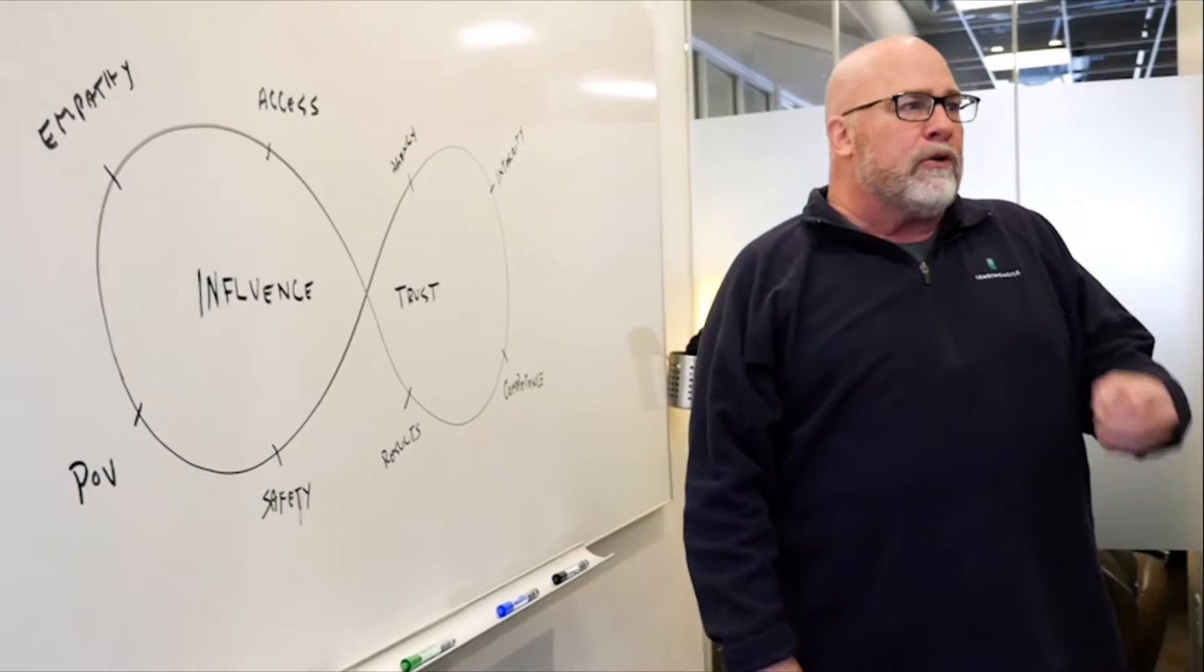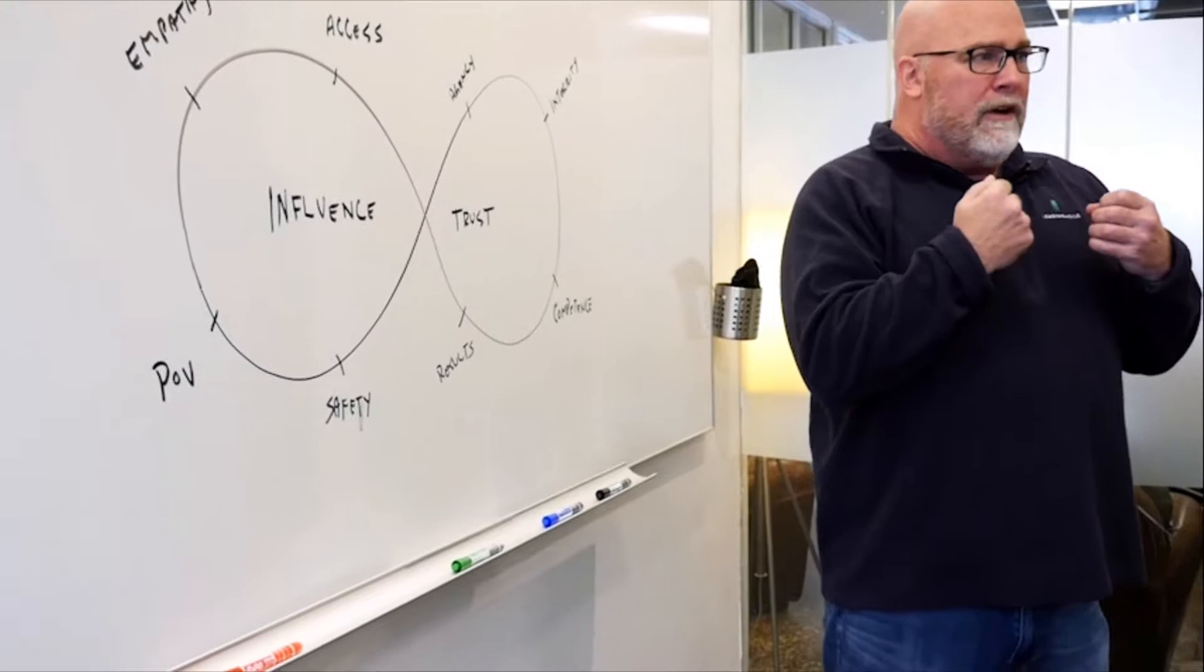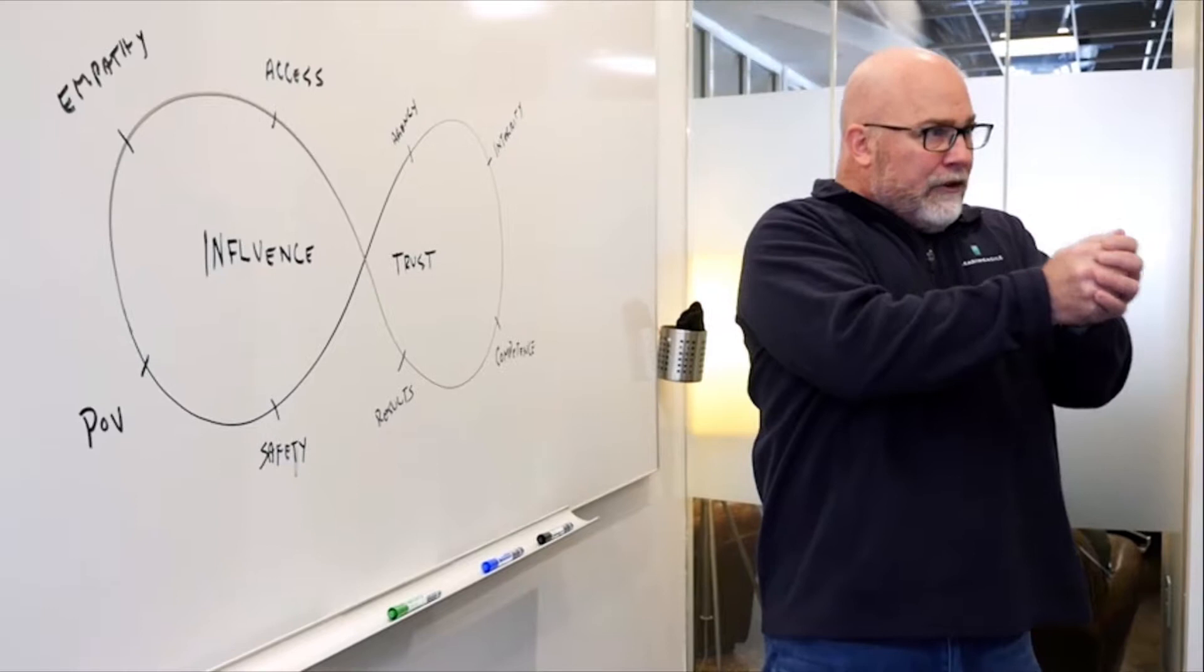The next step on the influence loop is having empathy for that person's problems. What are the things that person faces every day? What's going to get them fired? What's going to pressure them from their boss or threaten their livelihood or their ability to keep their kids in their private school? What is really underneath their stuff and their job that they're challenged with? And you have to understand it.